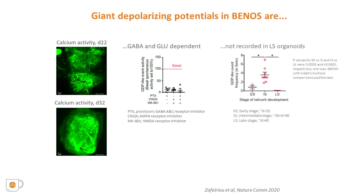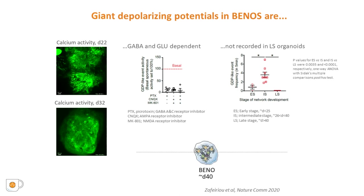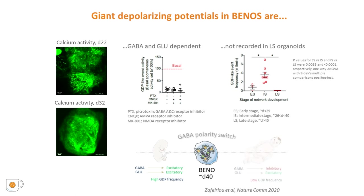The spontaneous GDP frequency kept increasing over time, but after day 40 to 45, no GDPs could be observed. By a series of experiments, we could prove that in early-stage PINOs prior to day 40, both GABA and glutamate were excitatory and contributed to GDPs, whereas after day 40, GABA polarity switched to inhibitory and led, therefore, to low GDP frequency, as actually happens in the early postnatal brain.